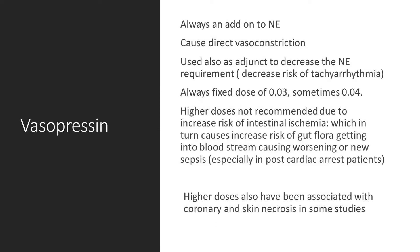Pressor number two is vasopressin, which is basically ADH — antidiuretic hormone. Vasopressin has been used primarily as a second-line add-on to norepinephrine in patients with septic shock. Norepinephrine is a titratable dose — you go from low to high — whereas vasopressin is a fixed dose. Vasopressin causes vasoconstriction and raises blood pressure, and it also decreases the requirement for norepinephrine, thereby reducing norepinephrine-related complications such as tachyarrhythmias.